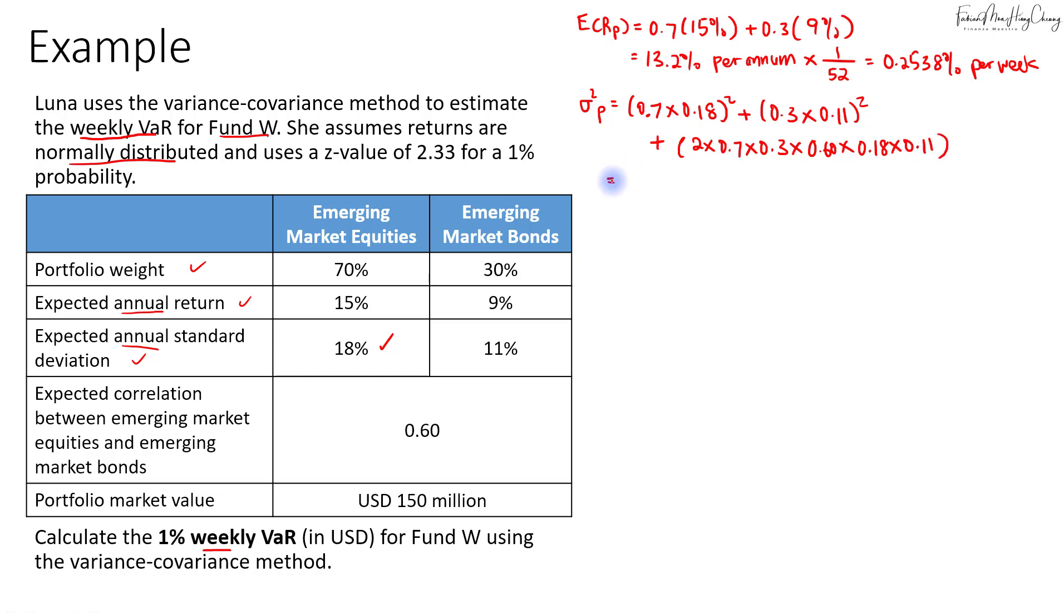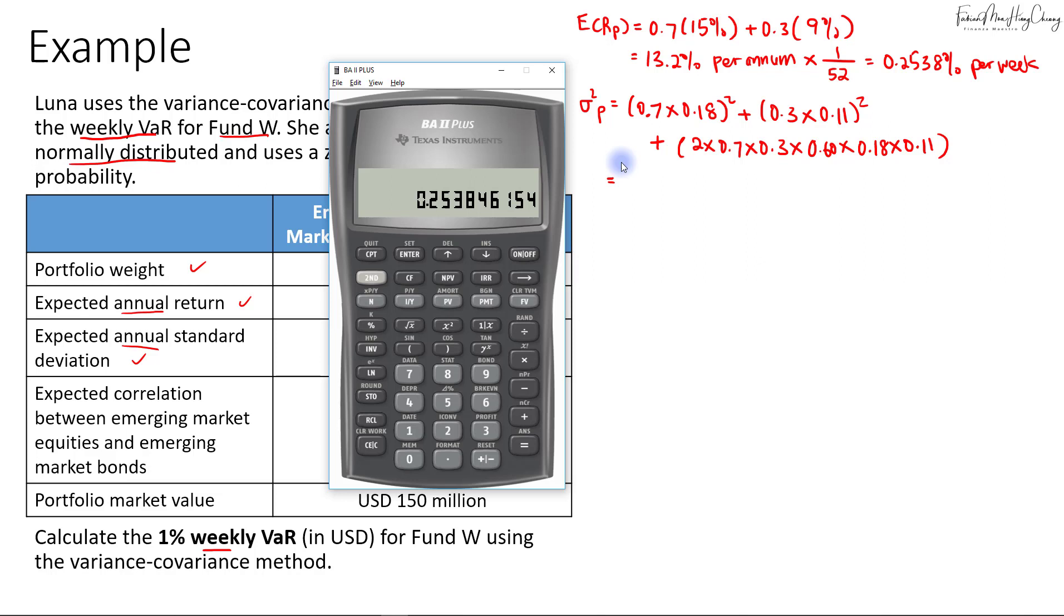For this, if you use your financial calculator, you can make use of the store function. For the first term: 0.7 times 0.18, then square it, store under number one. For the second term: 0.3 times 0.11, square it, store under number two. For the last term: 2 times 0.7 times 0.3 times 0.6 times 0.18 times 0.11, then store under number three. Then sum all three numbers up.